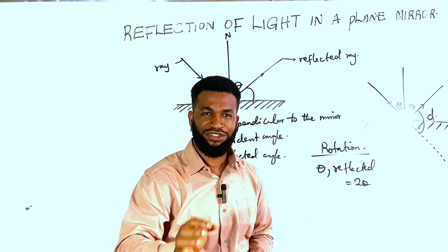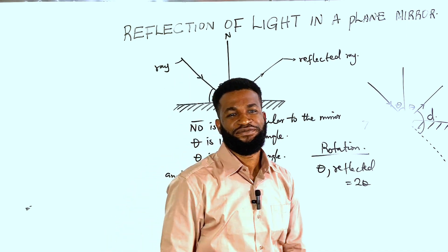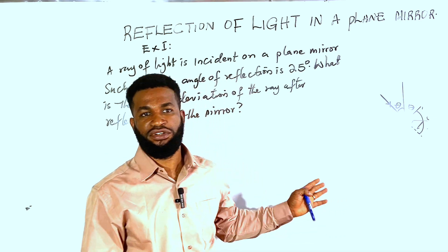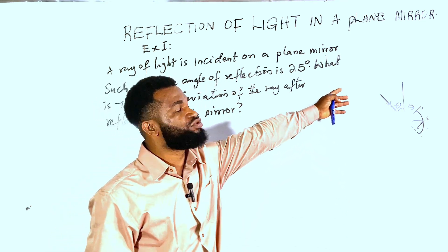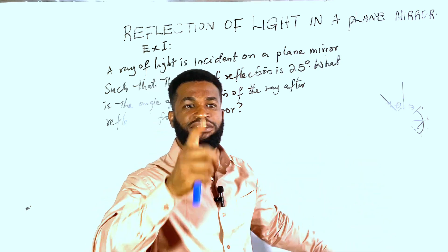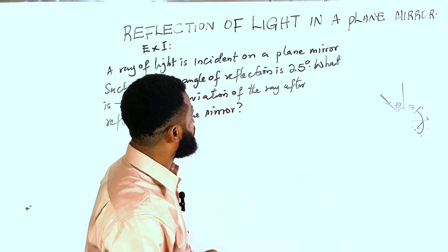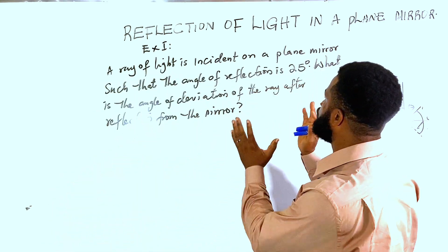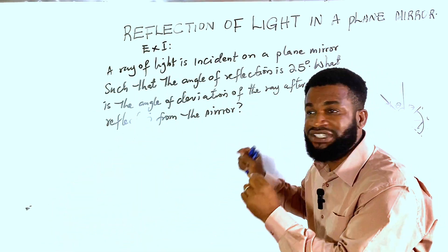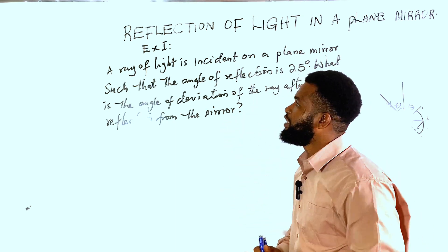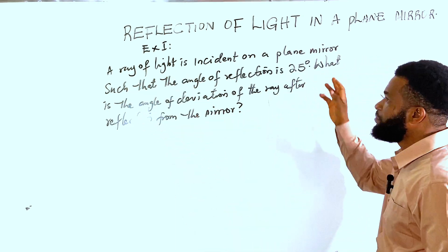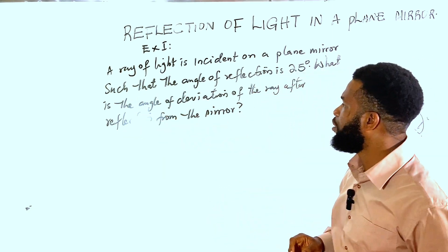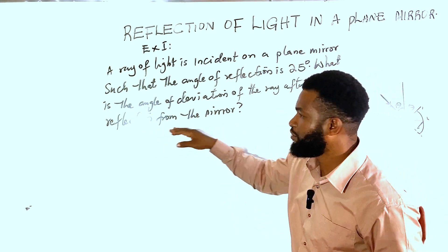Example one for the reflection of light through a plane mirror. Question: a ray of light is incident on a plane mirror such that the angle of reflection is 25 degrees. What is the angle of deviation of the ray after reflection from the mirror?